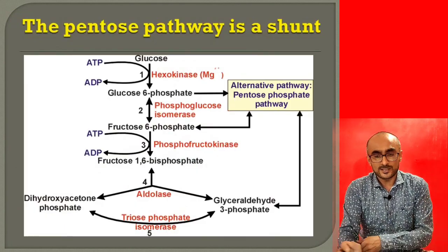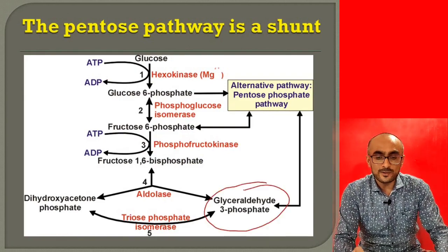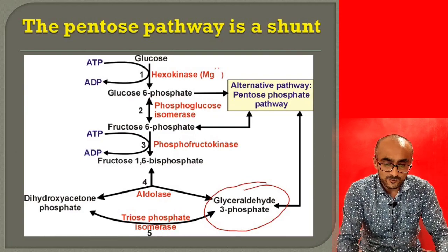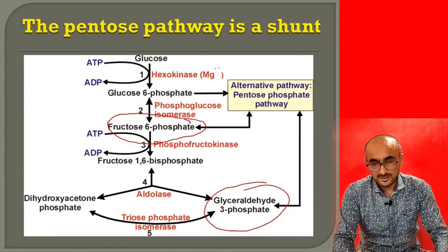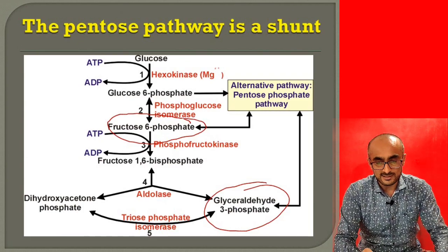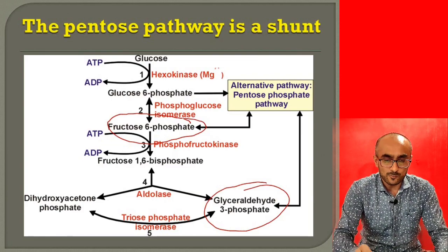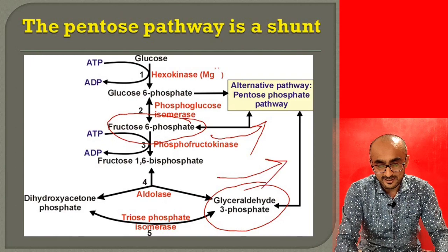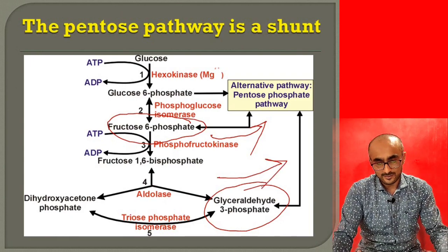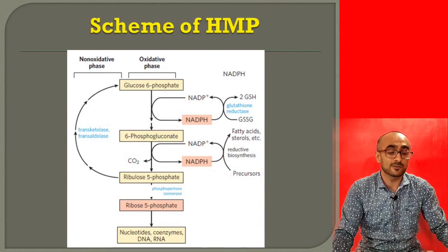The pentose phosphate pathway is also called a shunt because two of its products — glyceraldehyde-3-phosphate and fructose-6-phosphate — can enter glycolysis. Conversely, from glycolysis, these glycolytic intermediates can also enter the pentose phosphate pathway depending on the cell's requirements. That is why it is called a shunt — its products are linked to intermediates of glycolysis.